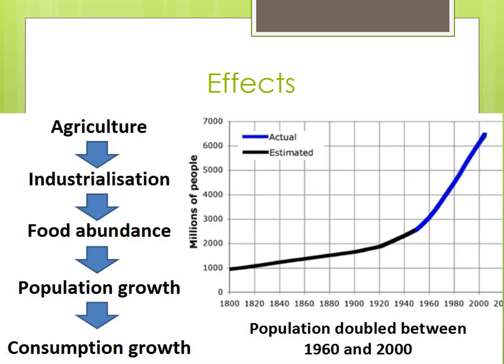At the same time, these advancements led to a decreasing need for farm labor to plant and harvest the crops. Many unemployed farm laborers migrated to the cities to work in factories, as did small farmers who could not compete with the larger, more profitable landowners. So rural areas and farming communities experienced a population loss as increasing numbers of people migrated to urban areas.